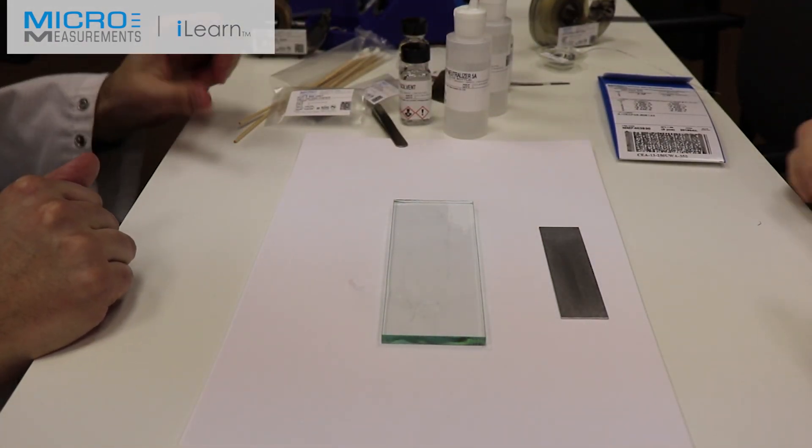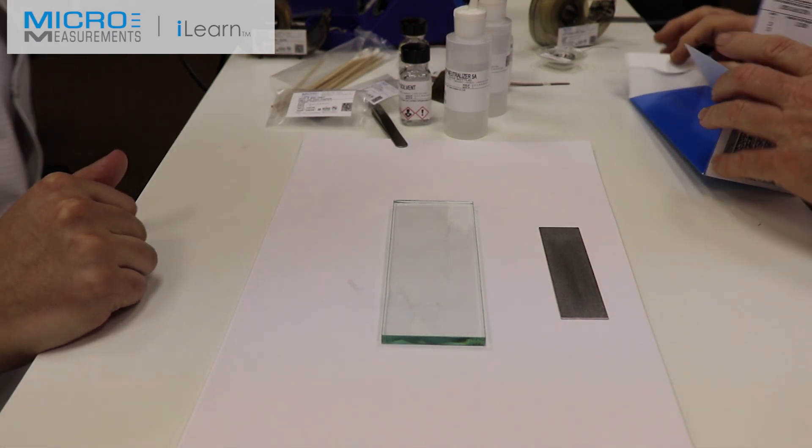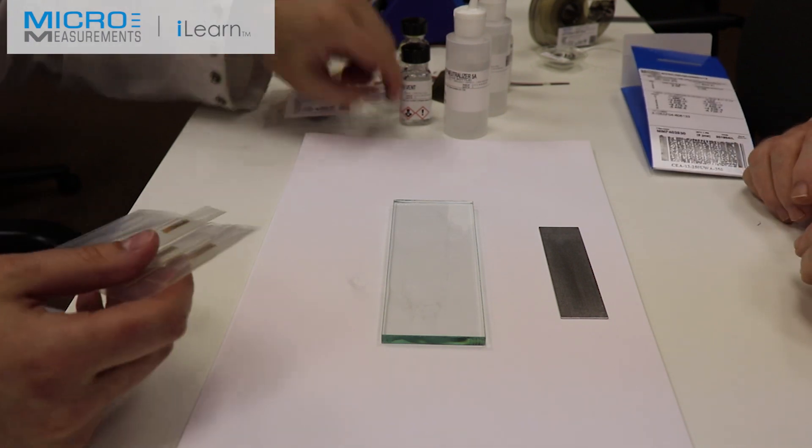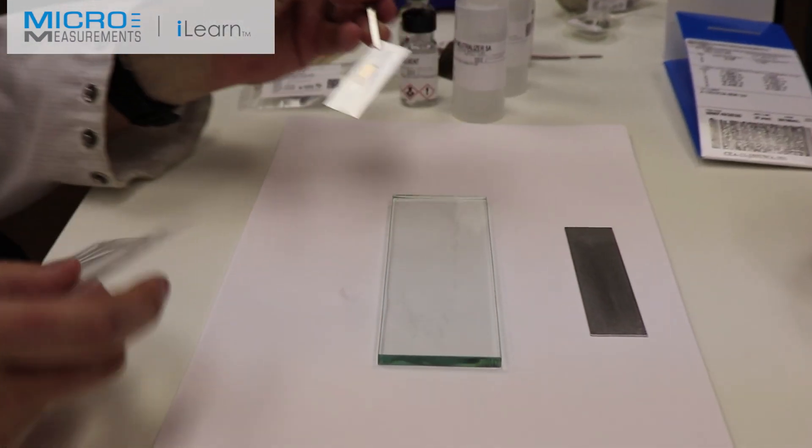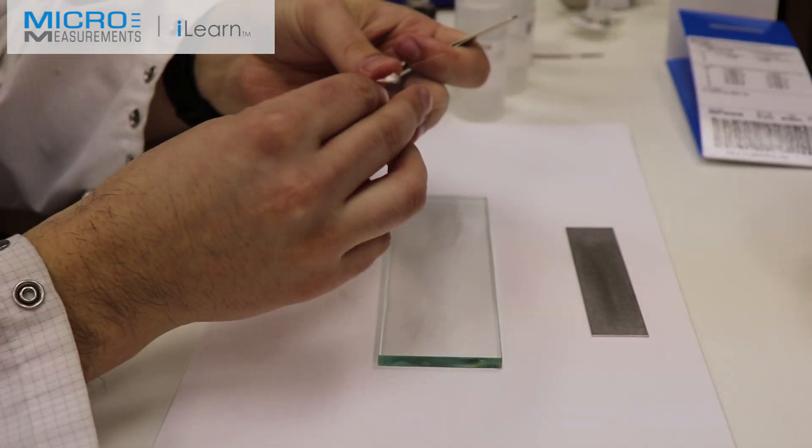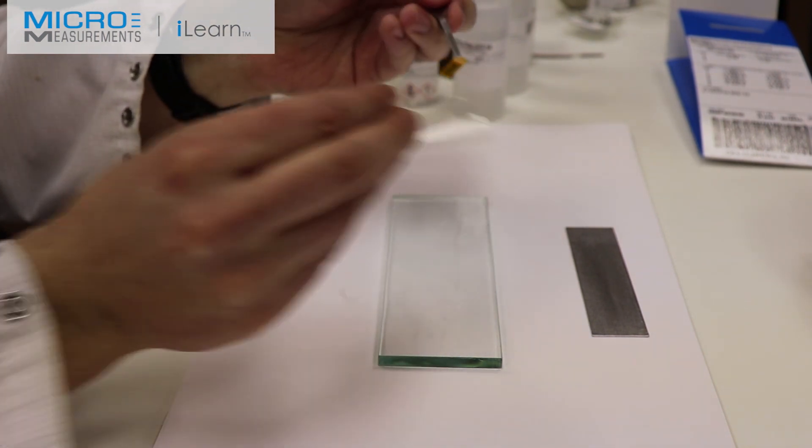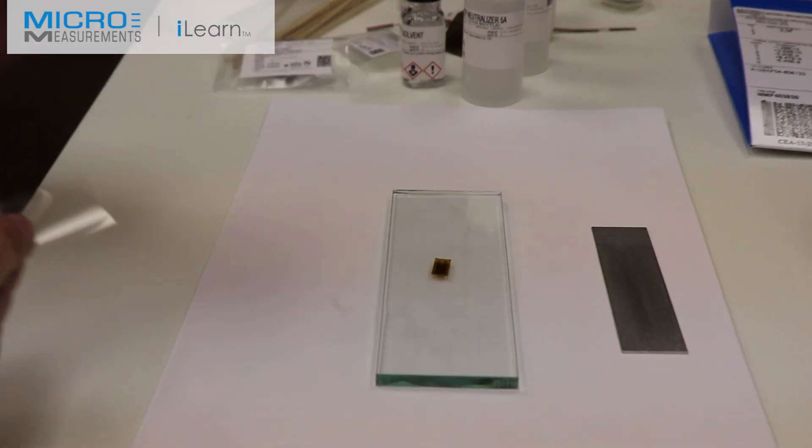We're now going to locate our advanced sensor CEA series gauges and our blunt nose tweezers. We're going to lay that gauge out bonding side down, which means shiny side up. If you can see copper, you've got it laid out right. If you can't see copper, turn it over. Go ahead and lay that down on the surface of our glass plate.